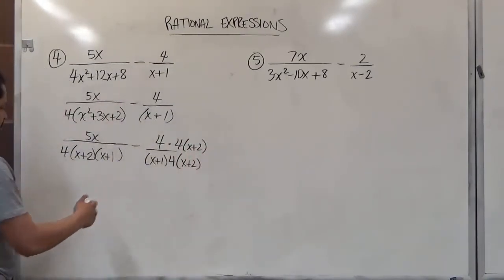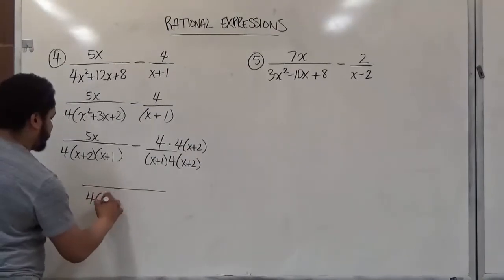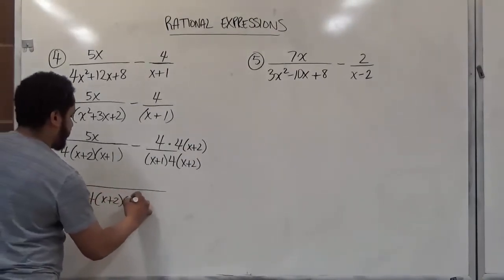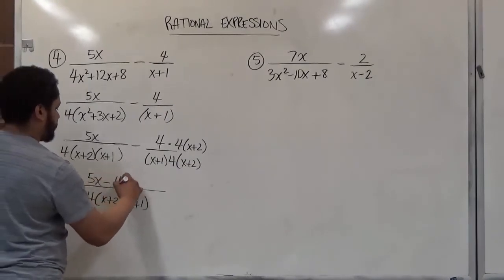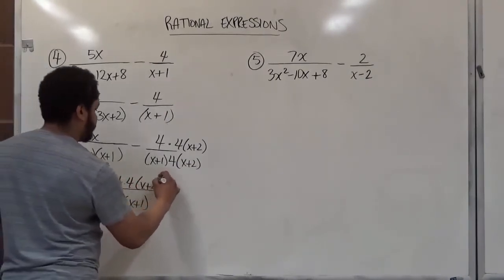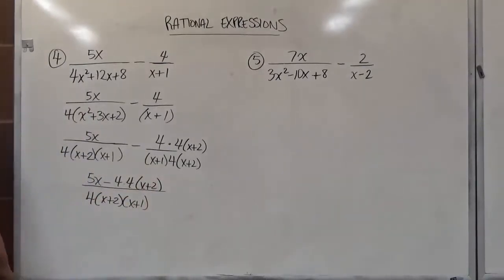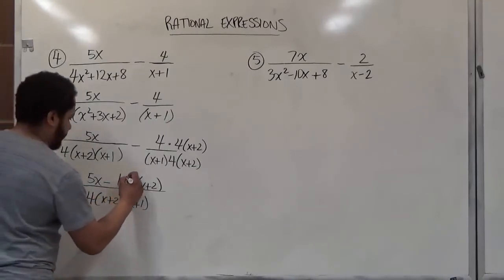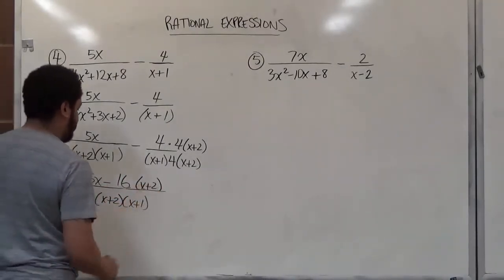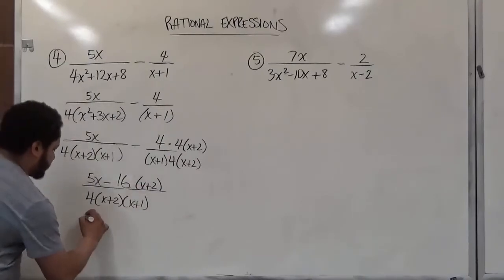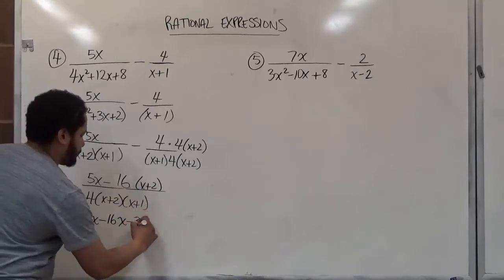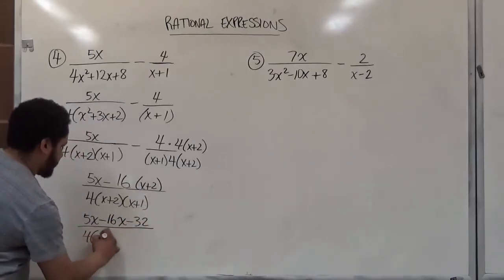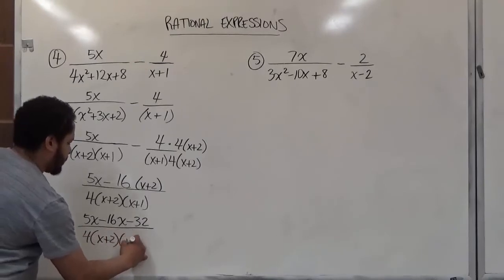So now let's join these denominators together. We have 4 times x plus 2 times x plus 1. In the numerator we have 5x, take away 4 times 4 times x plus 2. Now we can rewrite this first multiplication as 16, and we're going to distribute this term with the negative. So now we have 5x, then negative 16x, negative 32. All of this is over 4 times x plus 2 times x plus 1.